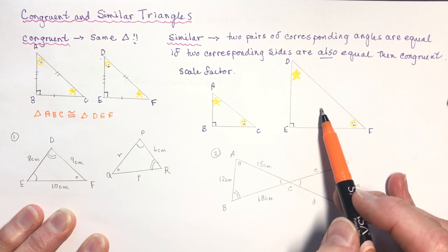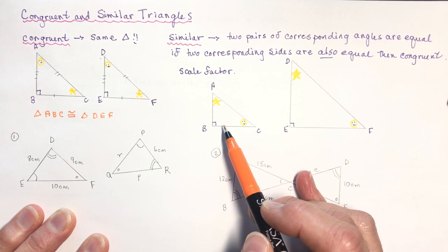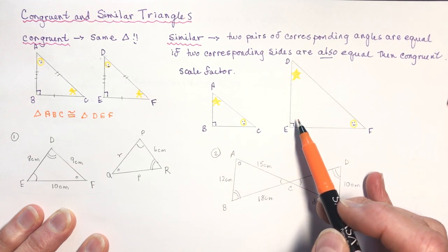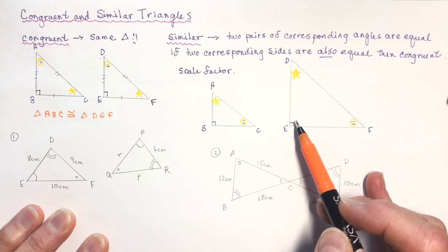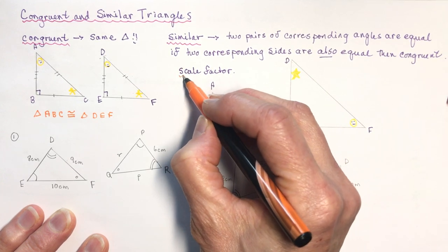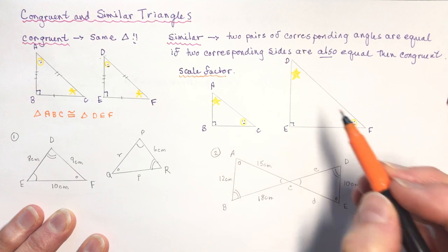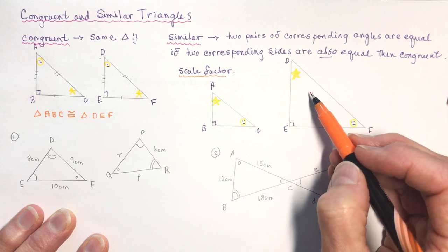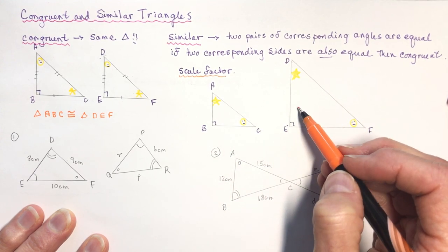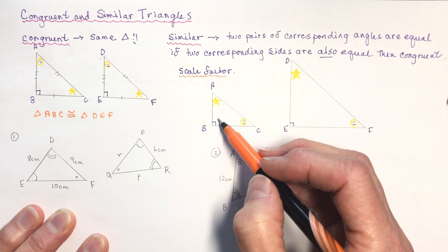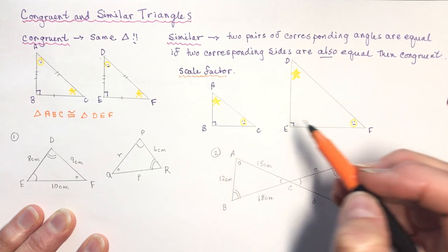In this case, this triangle is obviously bigger than this one, but they are similar triangles. They have a scale factor which either enlarges — going from the small one to the big one — or makes smaller, going the other direction.